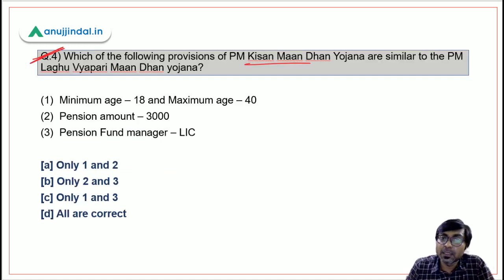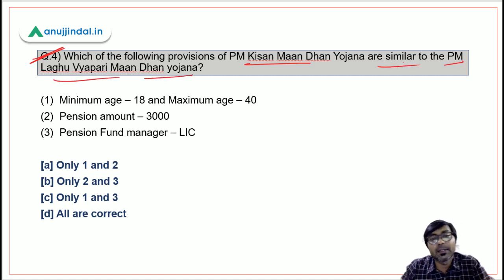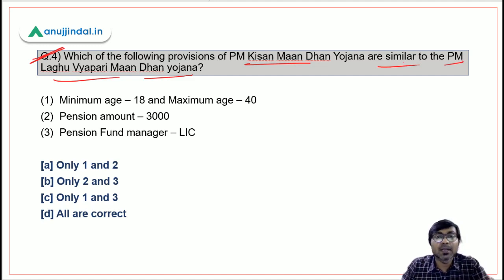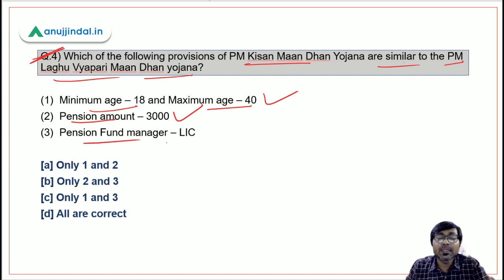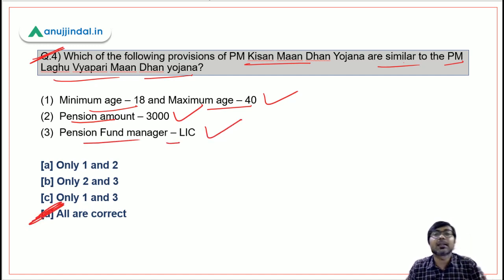Question 4: Which provisions of PM Kisan Mandhan Yojana are similar to PM Laghu Vyapari Mandhan Yojana? The minimum age of 18, maximum age of 40, pension amount of ₹3000, and pension fund manager LIC are all the same in both schemes. Therefore the correct answer is option D — all are correct.